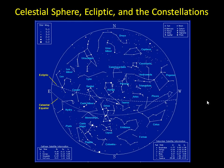It tends to be kind of abstract at first and you really have to think about all of these things like the Earth and the Sun and the stars. You have to think about this in three dimensions and how the night sky changes due to the Earth's rotation and the Earth's motion around the Sun. That's what we're talking about in today's lecture.